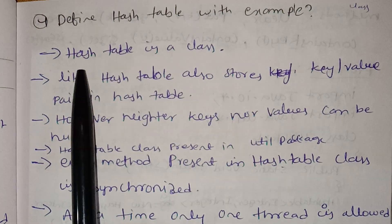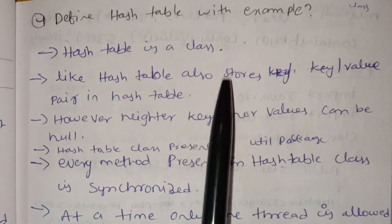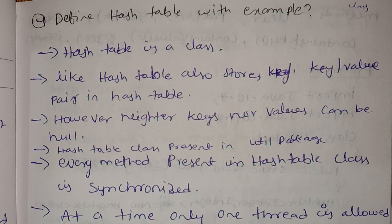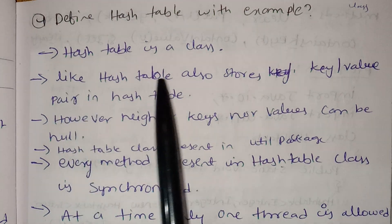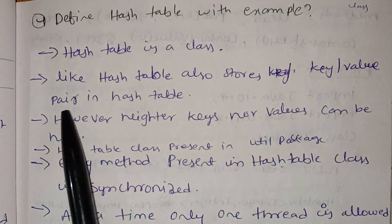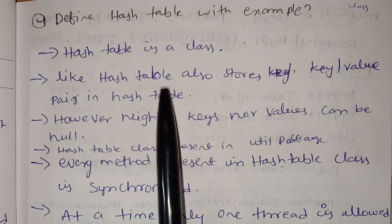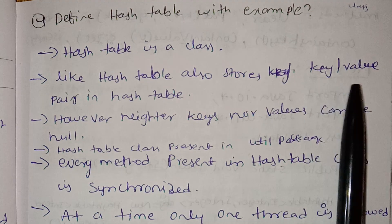Now, how to understand the hash table. Hash table is a legacy class. Where is the legacy class? Where is the stack? Where is the hash table? Where is the string tokenizer? Hash table stores keys and values as pairs.